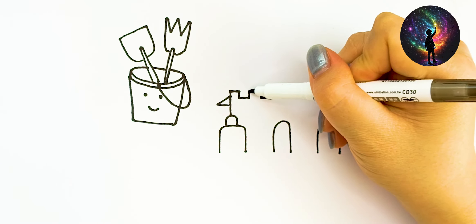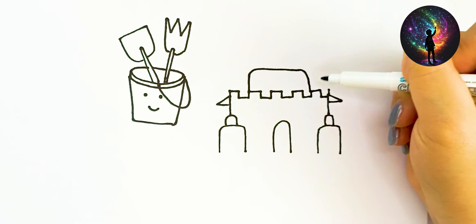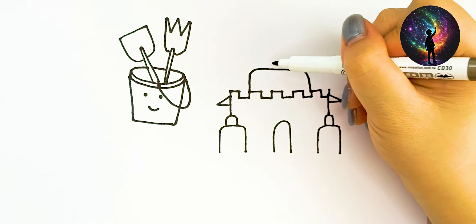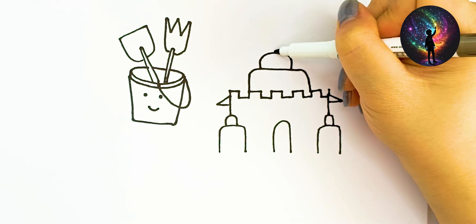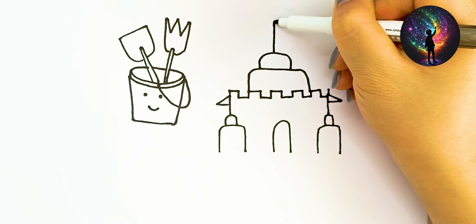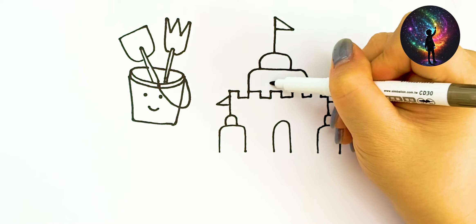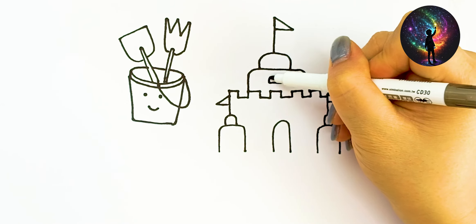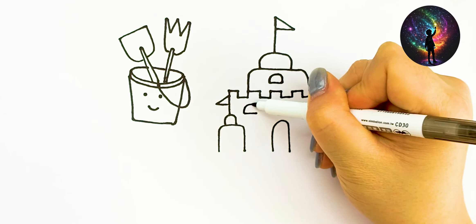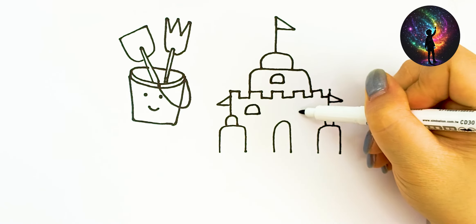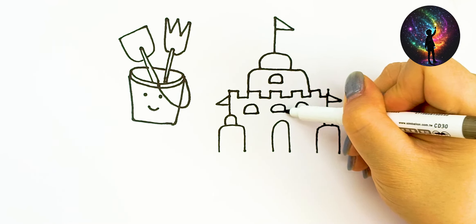A, B, C, D, E, F, G, H, I, J, K, L, M, N, O, P, Q, R, S, T, U, V, W, X, Y, Z. Now I know my ABCs. Next time won't you sing with me?